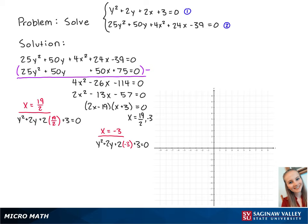Now we're going to plug the x values into one of the equations to solve for y. For x = 19/2, first we can simplify the equation to be y² + 2y + 21 = 0.